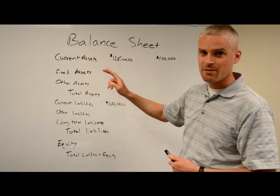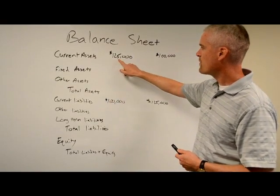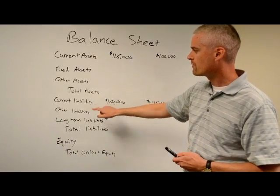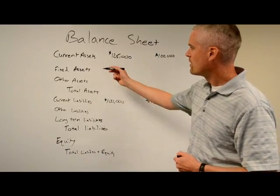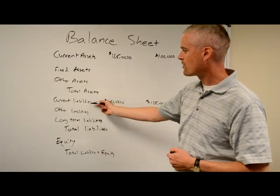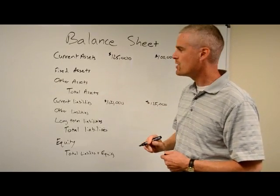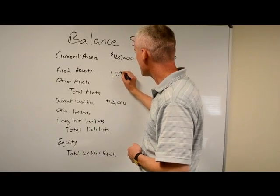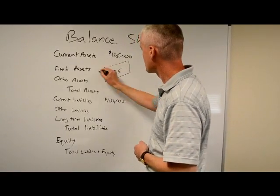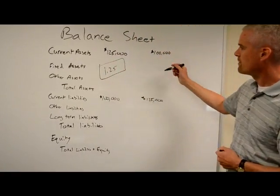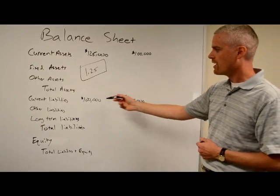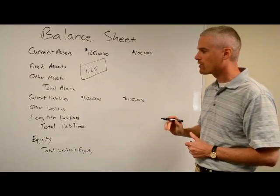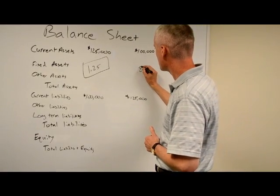Let's take a quick example. Let's say we had $125,000 of current assets and $100,000 of current liabilities. Current assets divided by current liabilities equals our current ratio. In this situation, the current ratio is 1.25. If we flip it — current assets of $100,000 and current liabilities of $125,000 — our current ratio is 0.8.